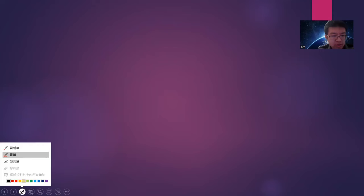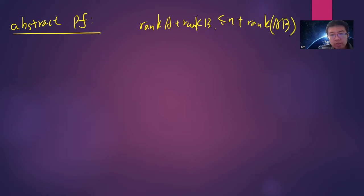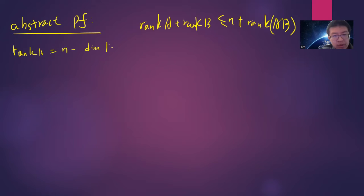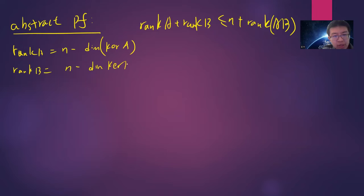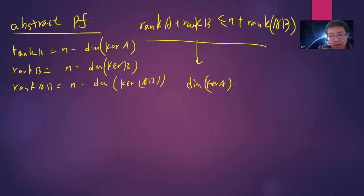Proof three is the abstract proof using linear algebra. Our goal is to show rank(A) + rank(B) ≤ n + rank(AB). Write rank(A) = n − dim(ker A), rank(B) = n − dim(ker B), and rank(AB) = n − dim(ker AB). The inequality becomes: dim(ker A) + dim(ker B) ≥ dim(ker AB).